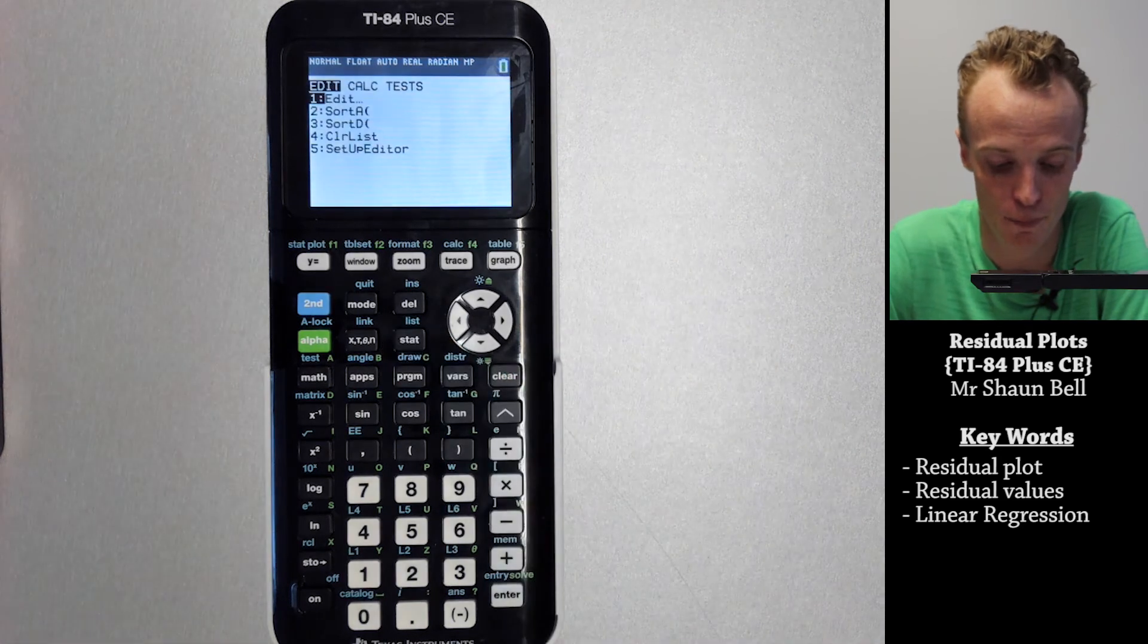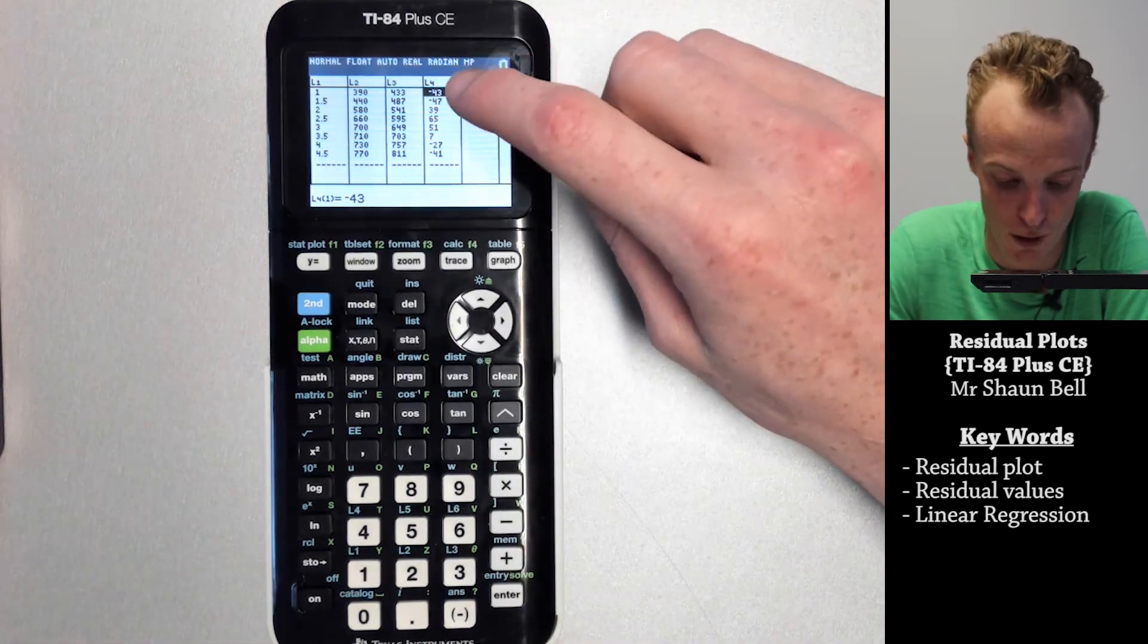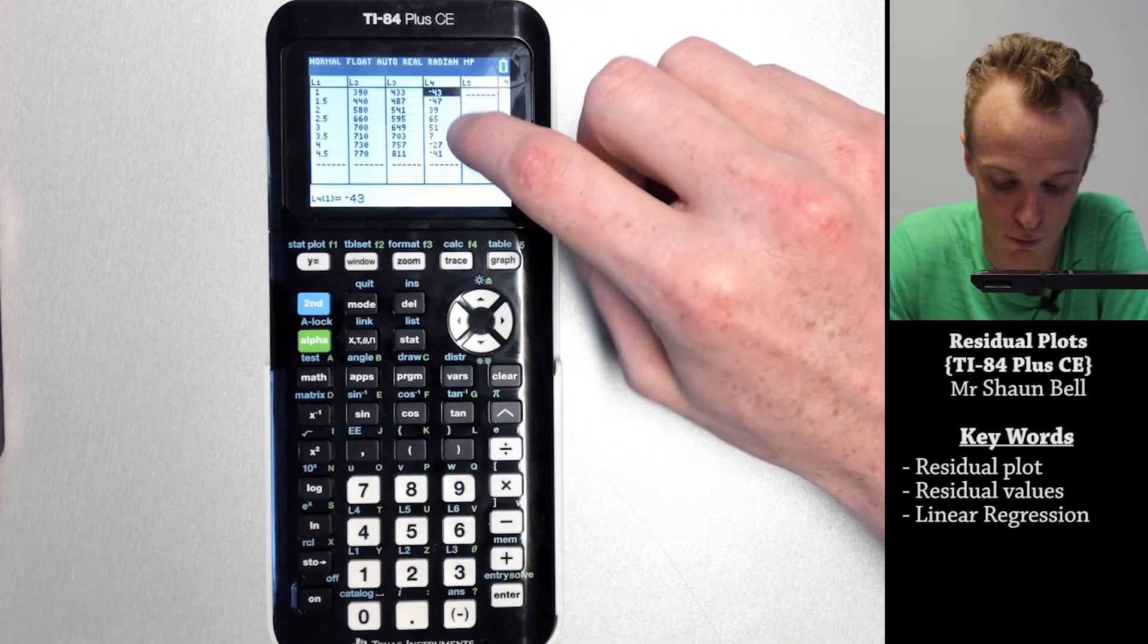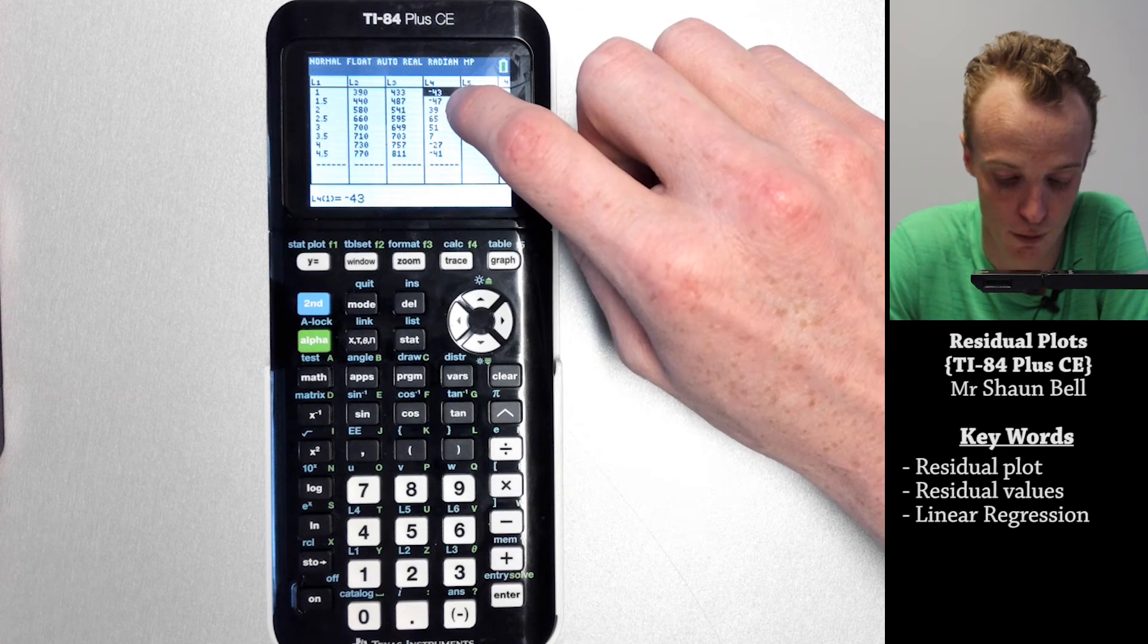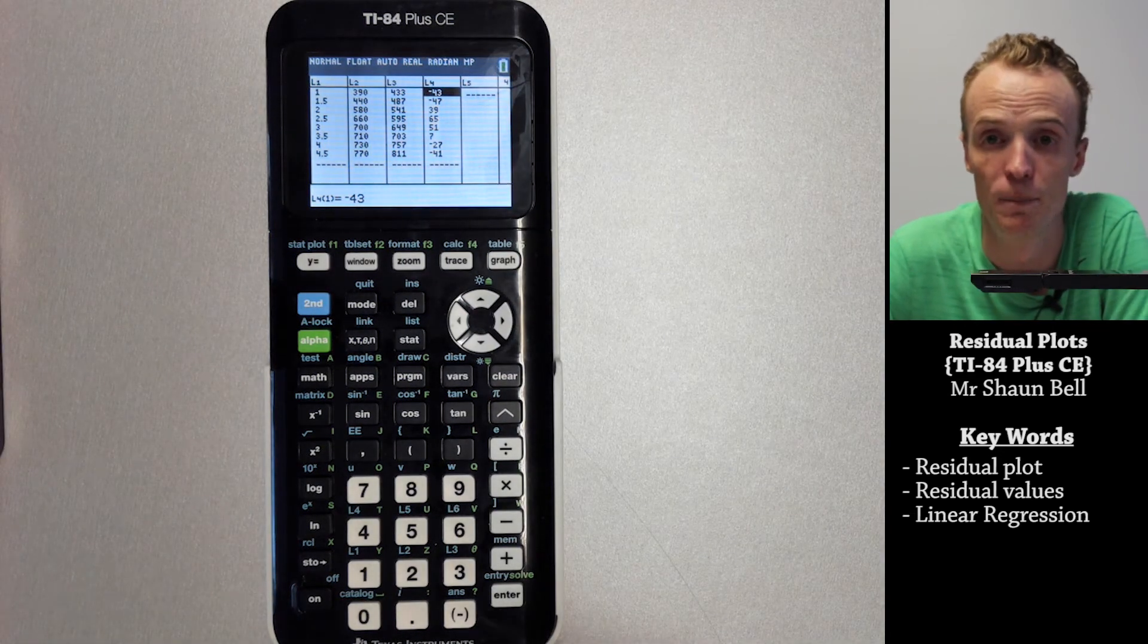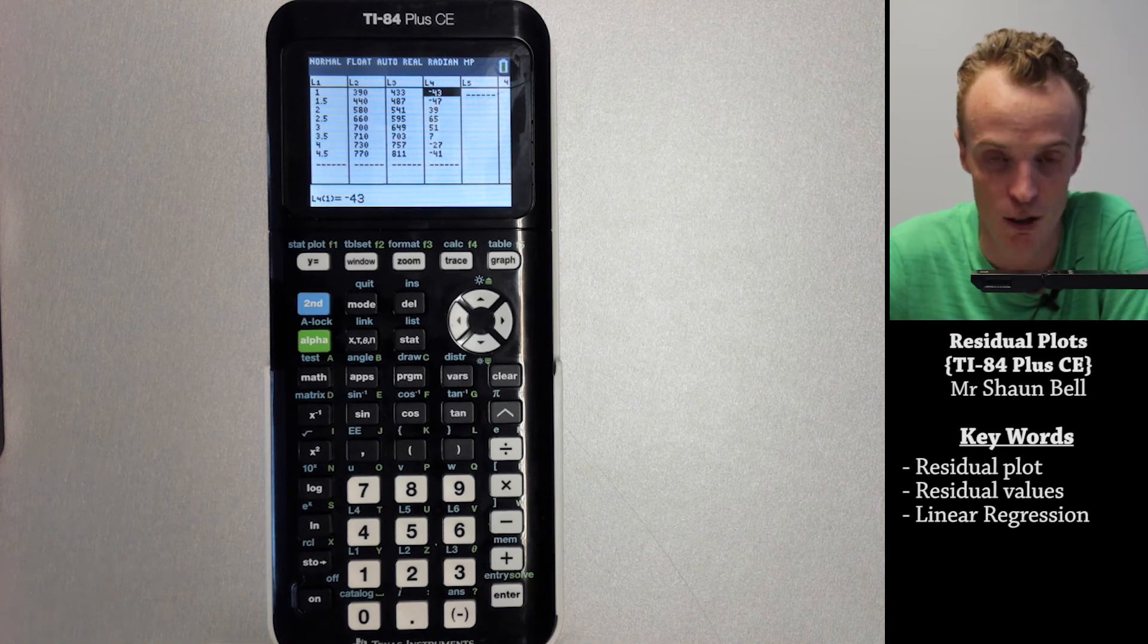If I press the stat button and go back to editing the lists, my residual values I can see range from positive 65 through to negative 47. So if I did positive 70 through negative 70 that will capture all of the residual values.